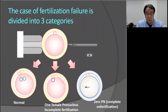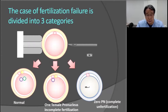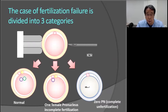ICSI technique has developed well; however, about 20 to 30% of all oocytes could not be fertilized. This slide shows three types of fertilization. The left slide is normal, the center shows only a female pronucleus, and the right shows no pronucleus. These could represent oocyte activation deficiency or fertilization failure, and they need some treatment to support fertilization.